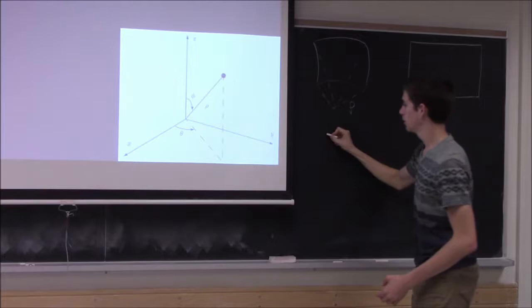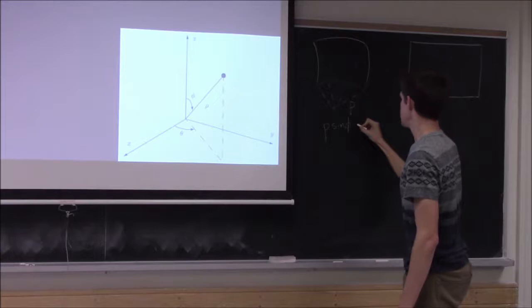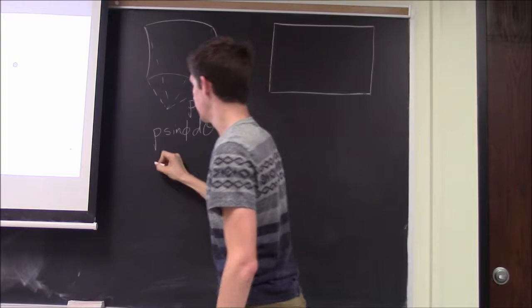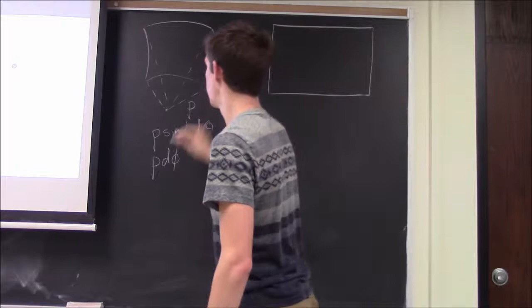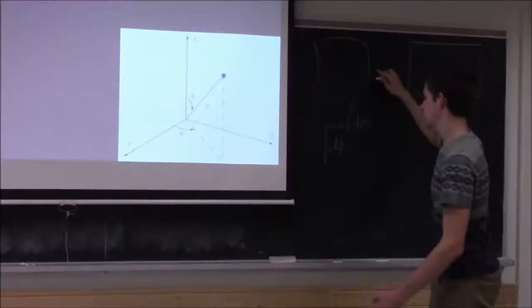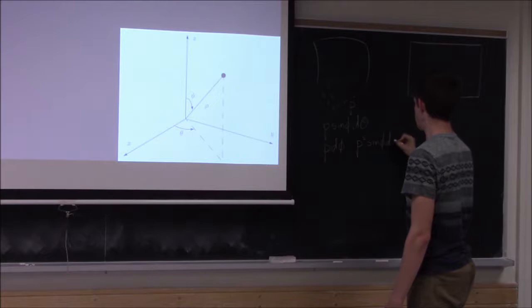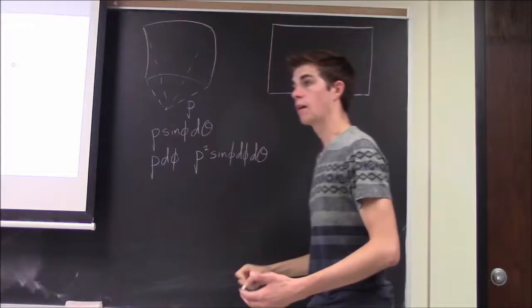And this change in the spherical rectangle is denoted by rho d phi. When you multiply these two components together, you get an area of rho squared sine phi d phi d theta.